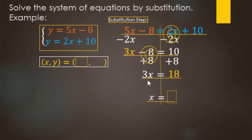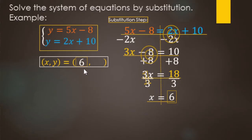We still need to undo the 3 being multiplied by x, so we divide both sides by 3. 3 divided by 3 is 1x, and 18 divided by 3 makes 6. So the x value for this system is 6. Next up, we need to find the y value.